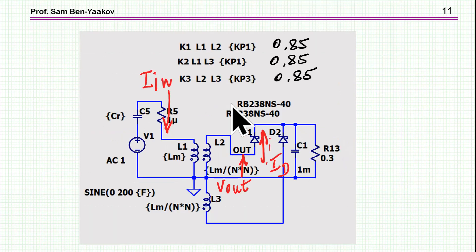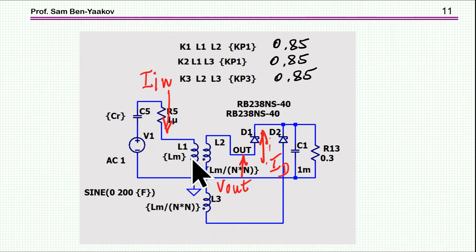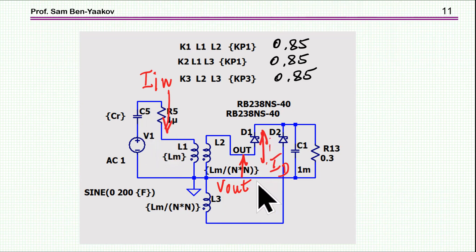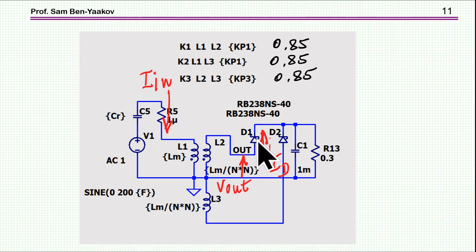I'm starting with the same coupling coefficient between the three windings in the basic generic coupled inductor model. They are coupled by this definition and have inductances defined. We are comparing the results and will be showing the input current, the current of one of the diodes, and the voltage at this point. This is a very sensitive point because with the leakage and the capacitance of the diode, there might be some parasitic oscillation.